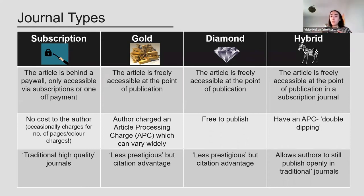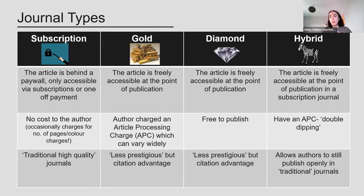The fourth option is hybrid — subscription journals where you can pay a fee to have your article openly accessible to anyone, but these are ultimately subscription journals. There's a lot of criticism around these in terms of double dipping — these journals are making revenue from subscriptions but also making revenue from open access fees. The journal line around these is that this allows authors to publish openly but in traditional journals, though you can see there's some controversy around that.